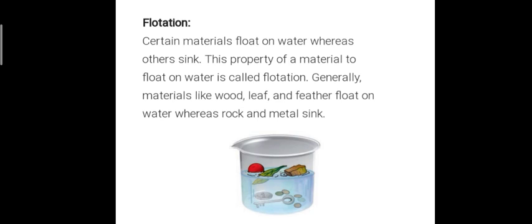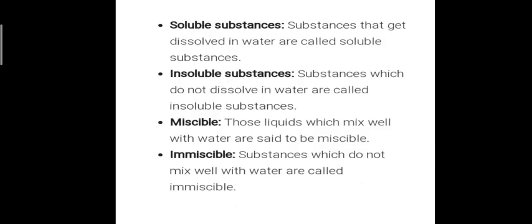The next property is flotation. Objects that are lighter in weight generally float on the water surface, while materials that are heavier in weight generally sink down into the water because their density is more. For example, wood, a leaf, and a feather float on water, while a keychain, coins, and rocks sink because their density is more.